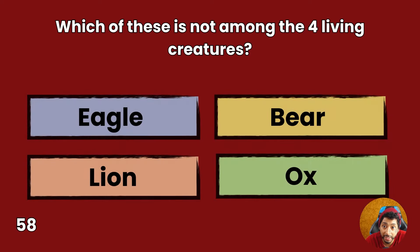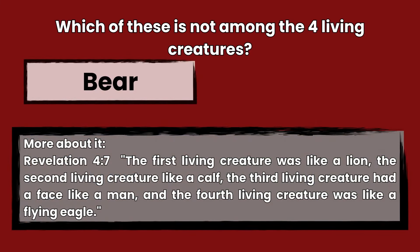Question 58: Which of these is not among the four living creatures? Eagle, bear, lion, or ox? Answer: Bear. Revelation 4:7 — The first living creature was like a lion, the second living creature like a calf, the third living creature had a face like a man, and the fourth living creature was like a flying eagle.